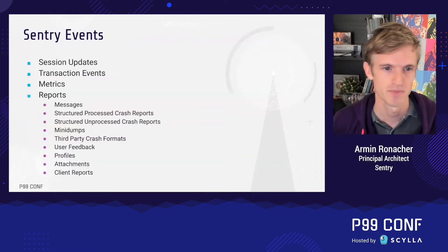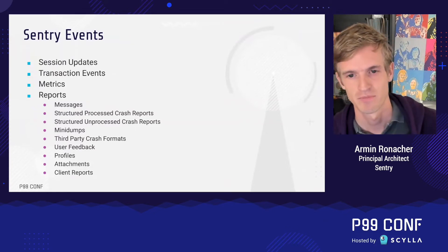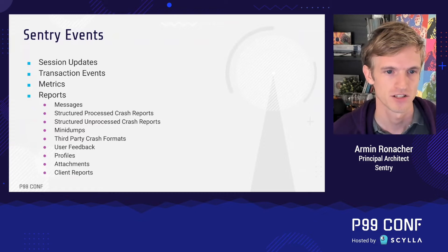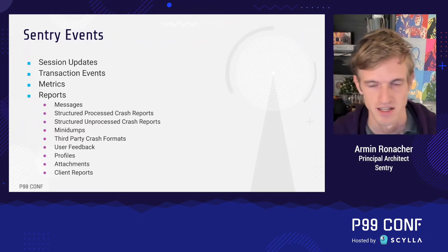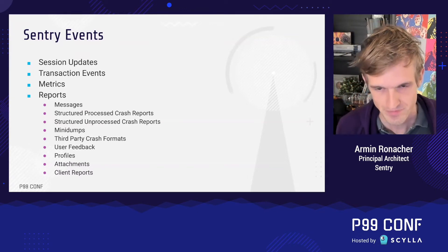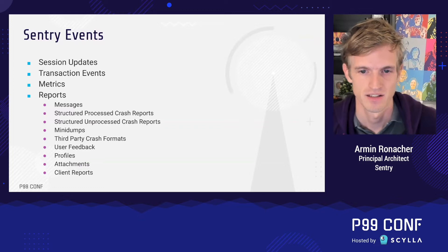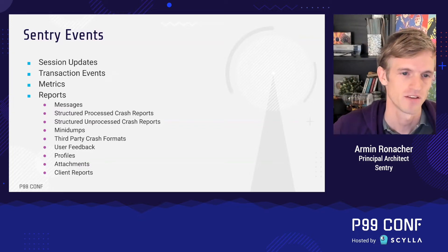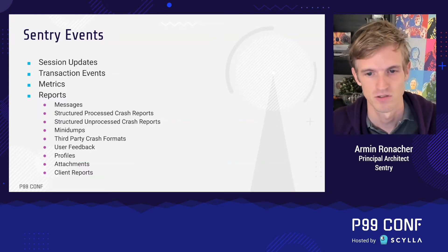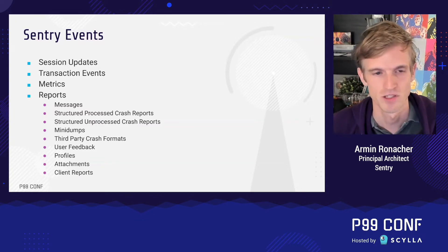There are different types of events that make it into the system. The smallest ones are session updates — something starts, something stops, something crashed but without detail. It's an abstract count of how many user sessions ended in a non-successful outcome. Transaction events carry performance data and can capture a distributed trace. At the other end we have basic error messages, structured crash reports, and even mini dumps — memory dumps of a crash requiring the most processing — plus attachments.